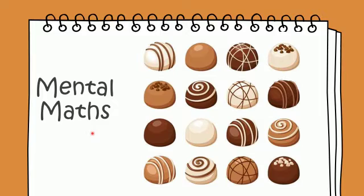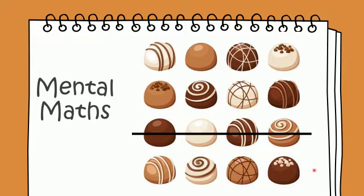Here is our mental math segment. You can see there are chocolates here. Let's count how many chocolates there are in all: one, two, three, four, five, six, seven, eight, nine, ten, eleven, twelve, thirteen, fourteen, fifteen, and sixteen. So there are 16 chocolates. If I say that I'm going to eat eight chocolates, I'm going to remove these eight. Now let's see how many chocolates are left: one, two, three, four, five, six, seven, and eight. Eight chocolates are left.